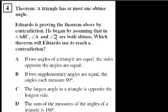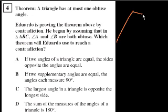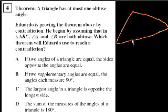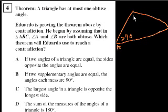Let's see what he does. He began by assuming that in triangle ABC, angles A and B are both obtuse. So he's saying — let me draw this — angle A and angle B are both obtuse. This means angle A is greater than 90, and angle B is also greater than 90.